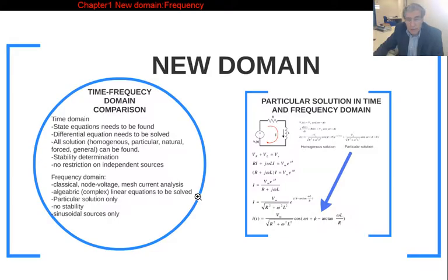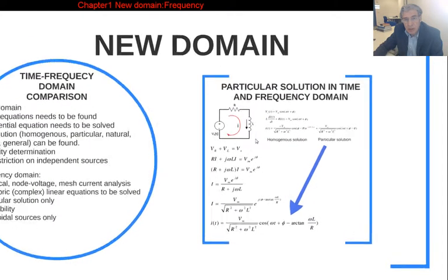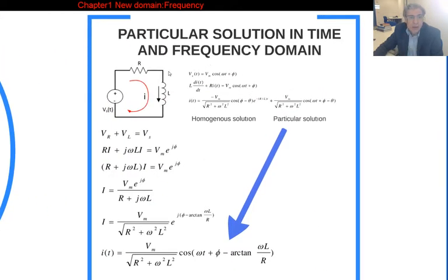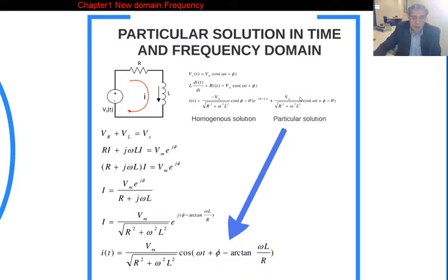After that comparison, let's apply it to a simple circuit. We have a serial connected LR circuit — a first order circuit — with a sinusoidal source. This gives a first order differential equation. The solution has a homogeneous part and a particular part, and the particular part is a sinusoidal function in the form of the source.